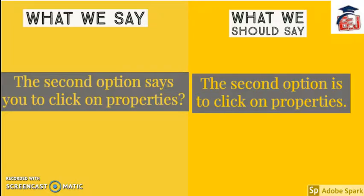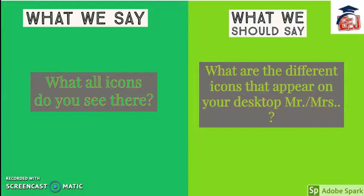Here is one more tip: whenever you want to go to the properties, you have to right-click and then go to properties. Also, 'What all icons do you see there?' is not the correct way. You should say 'What are the different icons that appear on your desktop?'